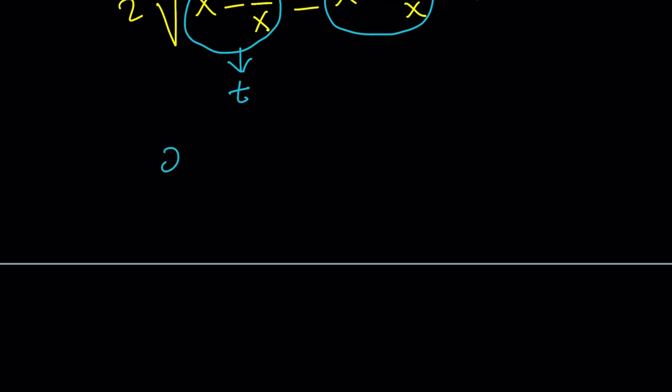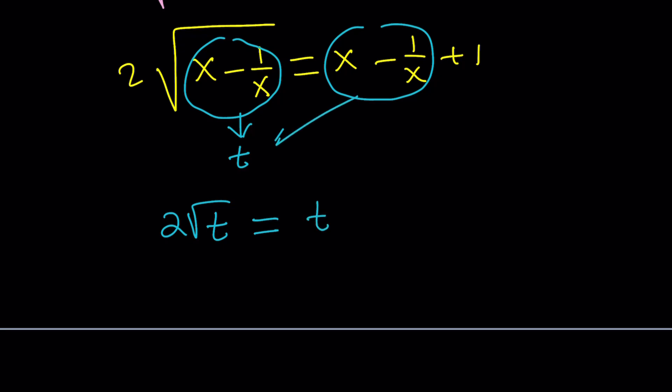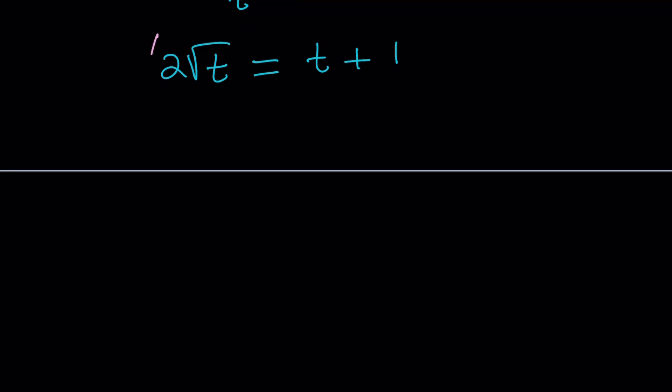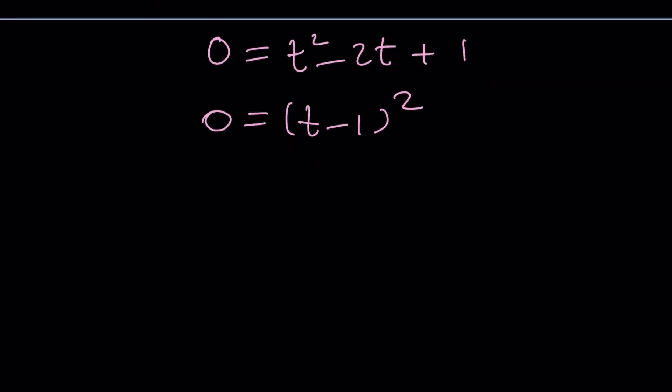And this is going to give us 2 times the square root of t equals t plus 1. Now, you might be wondering how do I solve this equation? It's radical, right? So, a lot of times with radical equations we square both sides. And then, from here we get 4t equals t squared plus 2t plus 1 and then subtract 4t we get t squared minus 2t plus 1 equals 0. But guess what? This is t minus 1 squared equals 0. And t equals 1.